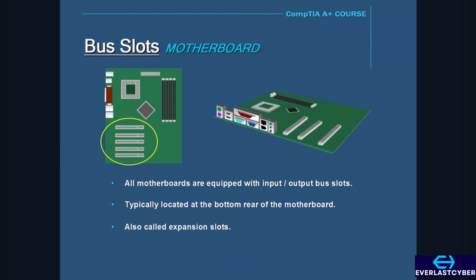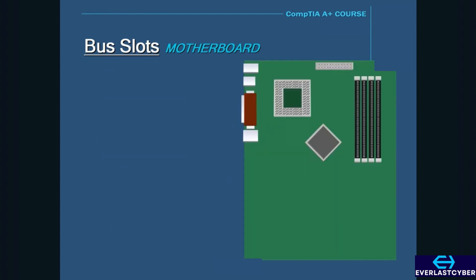For instance, if the motherboard doesn't already have a built-in sound card, then you can add a sound card by inserting one into one of these bus slots, giving your computer the ability to produce sound. Or, if the motherboard doesn't have enough USB ports to suit your needs, you can add a USB expansion card in one of the bus slots to add more USB ports.